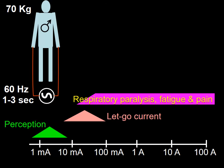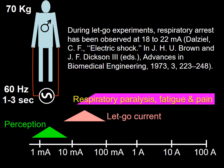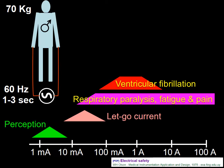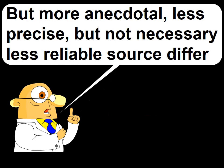Respiratory paralysis, probably due to diaphragmatic contraction, was observed with as little as 18 milliamps of current. Fatigue and pain was also felt at this magnitude of current. The threshold for ventricular fibrillation in the most vulnerable volunteers in the setting of this experiment was about 75 milliamps.